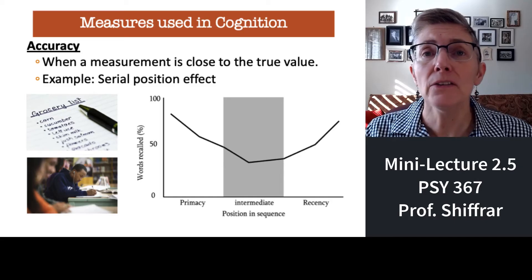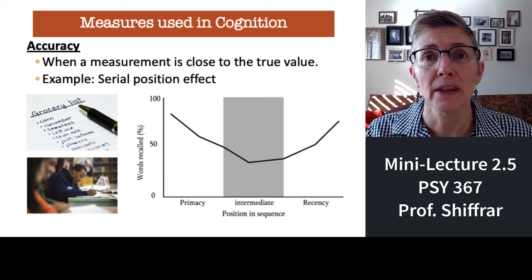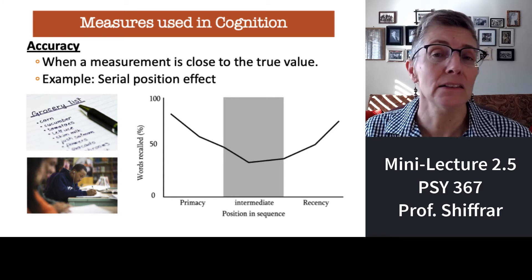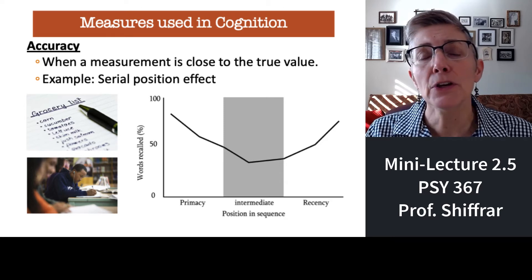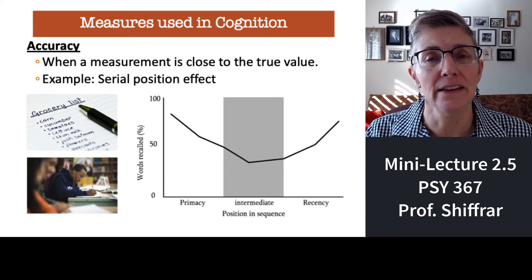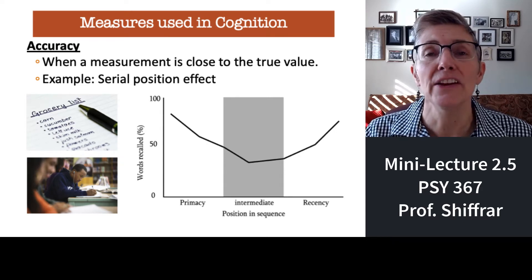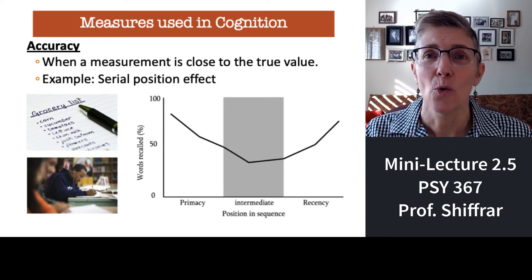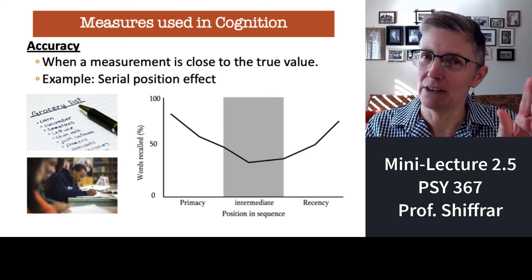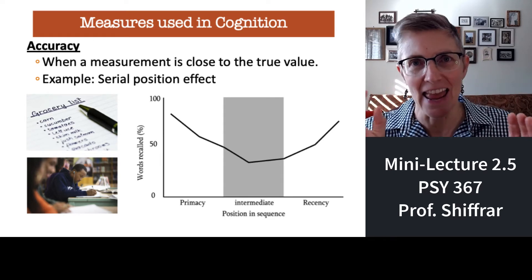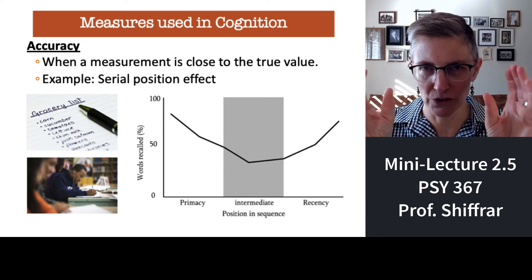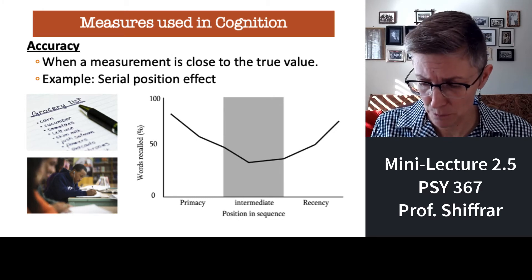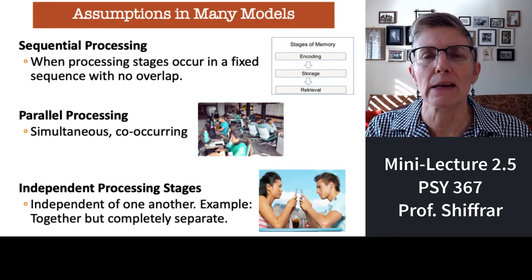Another very common measure in cognitive psychology is accuracy — how accurately can you remember words on a list or the order in which something happened. A classic example is the serial position effect: if given a list of words, your memory for the beginning and end of the list is much more accurate than for items in the middle. This has big implications for studying: what you study at the beginning and end of your session will be remembered more accurately than what you study in the middle.